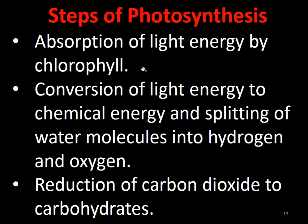There are three steps in photosynthesis: absorption, conversion, and reduction. First, absorption — the leaves absorb light energy by the chlorophyll, which is present in the chloroplast of the leaf. Second, conversion — that light energy is converted into chemical energy by splitting the water molecule into hydrogen and oxygen. Third, reduction — CO₂ is reduced to carbohydrate (C₆H₁₂O₆), which is glucose, by removing oxygen and adding hydrogen.